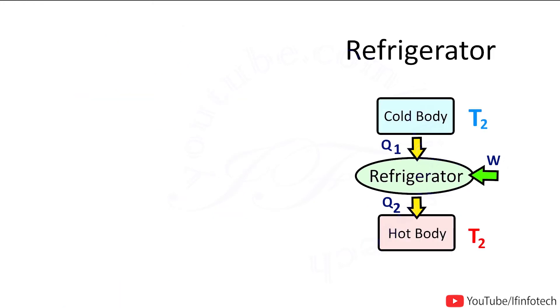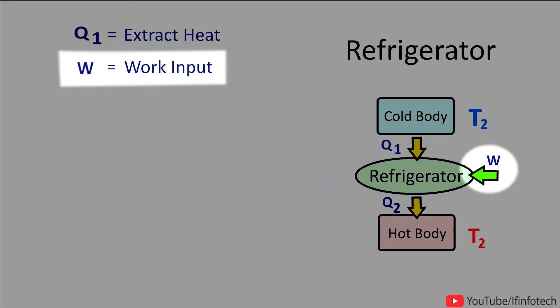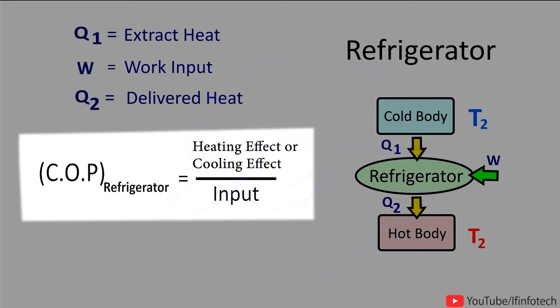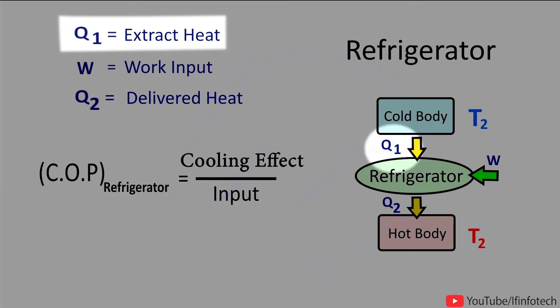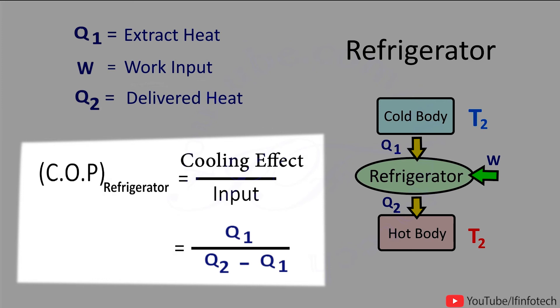In the case of a refrigerator, we extract heat from the cold region to maintain it at low temperature. Because the purpose of a refrigerator is to cool the system, we provide work by means of a compressor. The coefficient of performance (COP) is the ratio of cooling effect to work input. The cooling effect is Q1 — we extract Q1 amount of heat from the cold region and reject Q2 to the hot region. The work input is Q2 - Q1. Therefore, COP for refrigerator = Q1 / (Q2 - Q1).